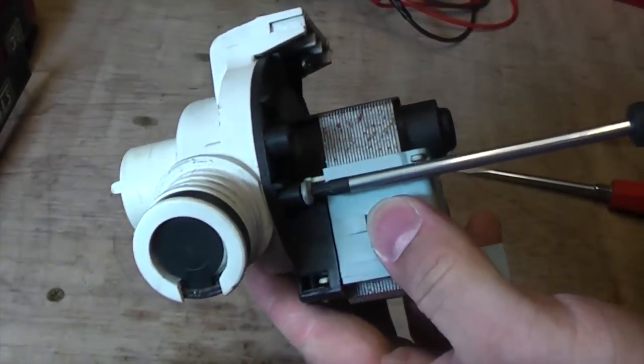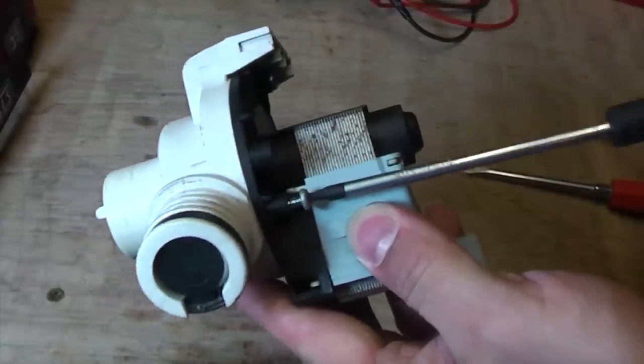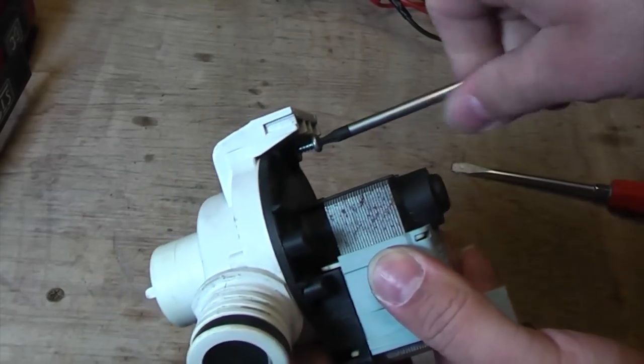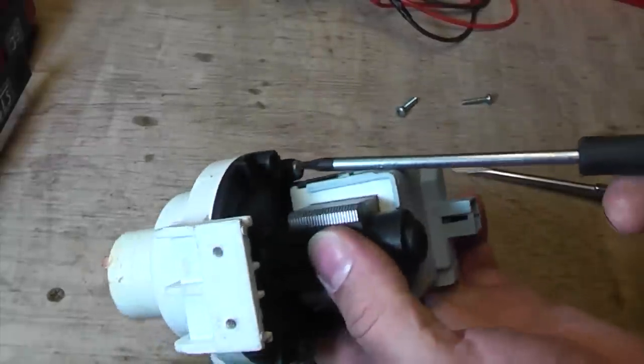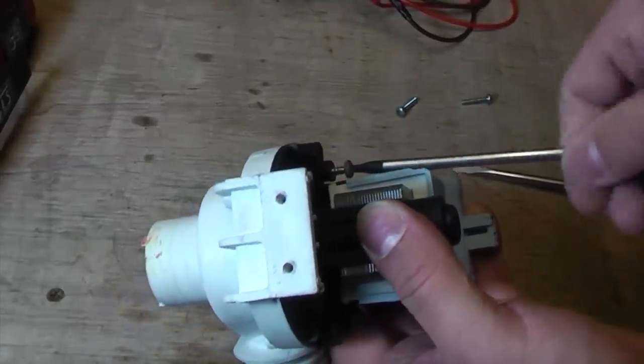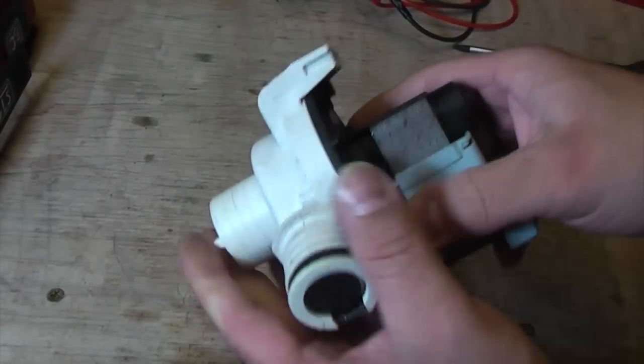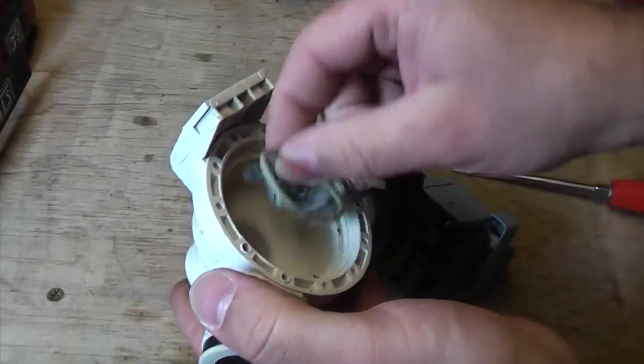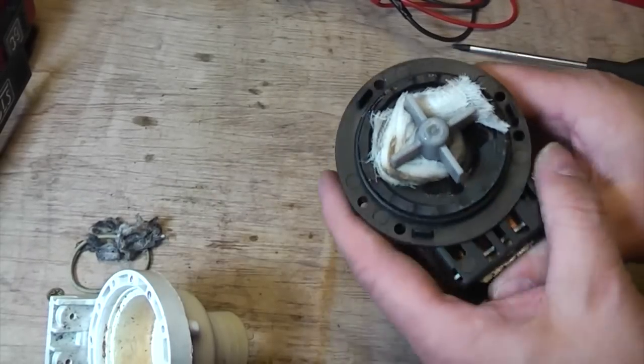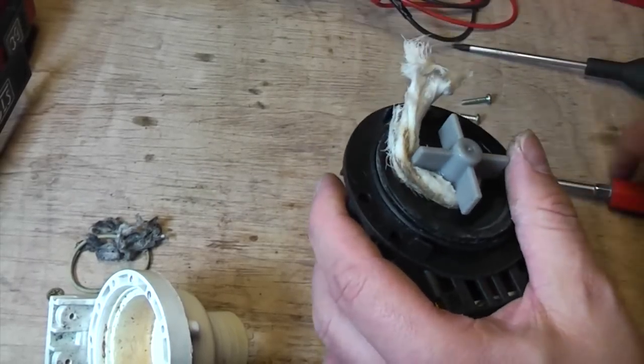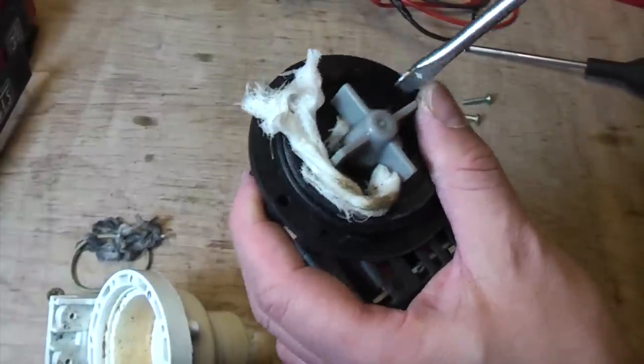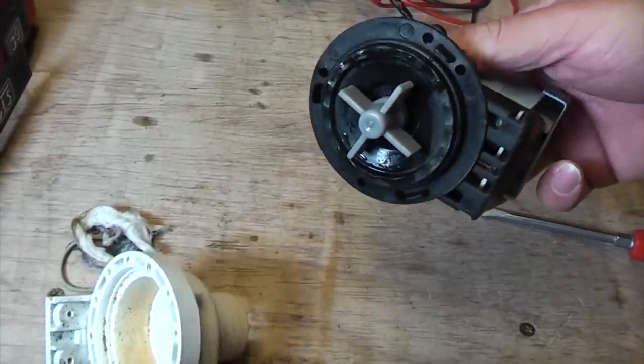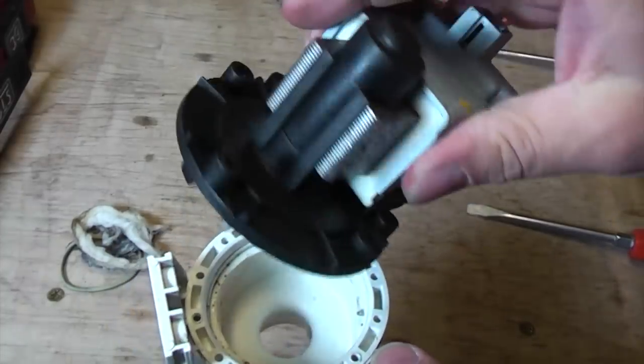We're just going to remove these three Torx head screws now and take a look inside the pump. I'll just gently prise it apart and you can see there that it has got some fluff in there, a piece of elastic band, and a bit of fabric that's wrapped around the impeller. We'll just gently prise that off. If we reassemble that, we should find that it works a lot better without those bits in there.